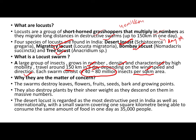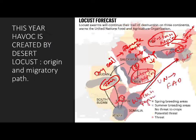Why are we concerned? The swarm destroys leaves, flowers, fruits, seeds, bark, and growing points, crushing plants by sheer weight as they descend in massive numbers. Desert locust is regarded as the most destructive of all the species entering India. Internationally, a small swarm covering one square kilometer can consume food equivalent to that of around 35,000 people.